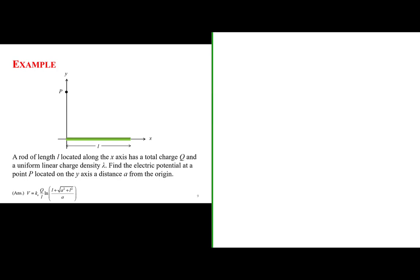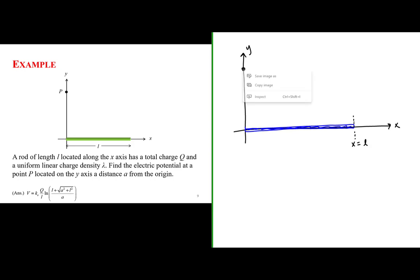Let's begin by sketching this scenario. We have a line of charge of finite length positioned on the x-axis. This charge has a length L, so I position the left end of the charge at the origin and the right end at the position x equals L. There is a point on the y-axis at y equals A.